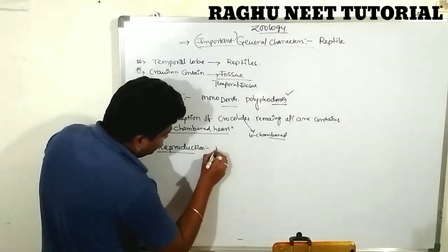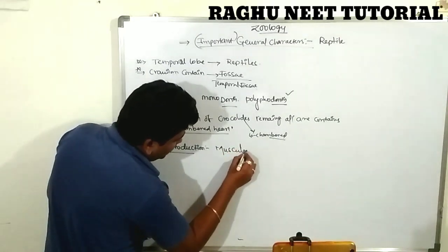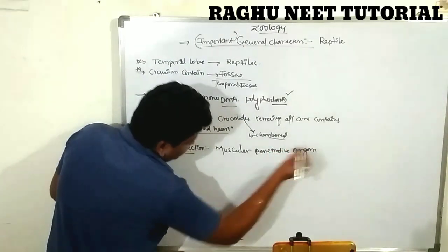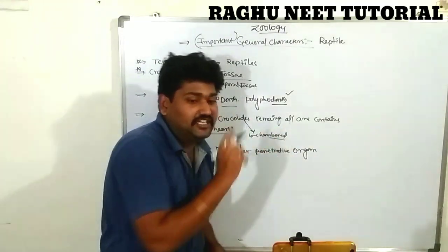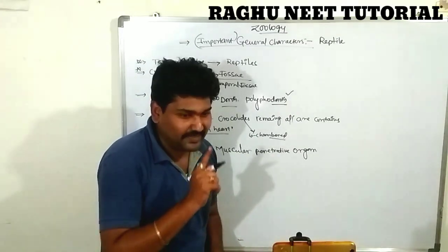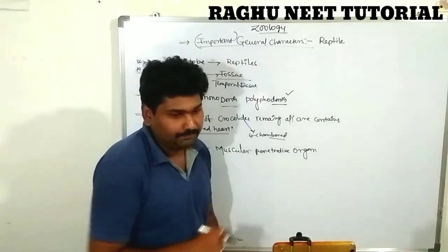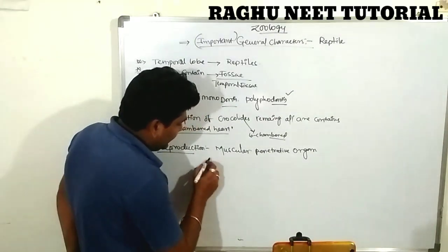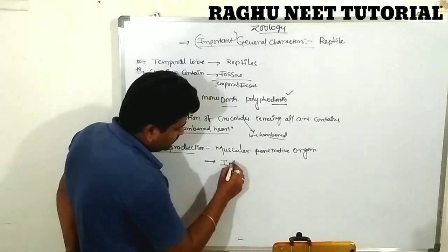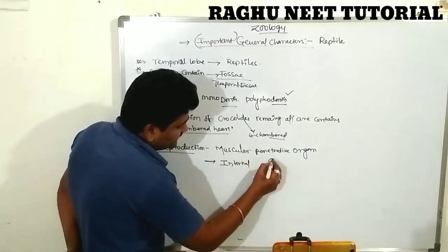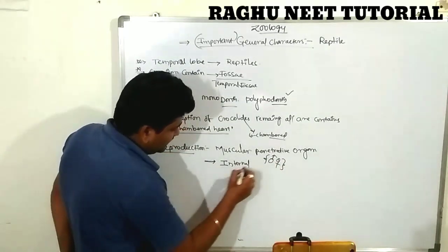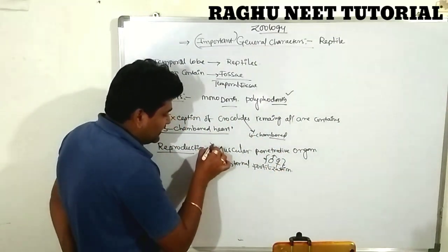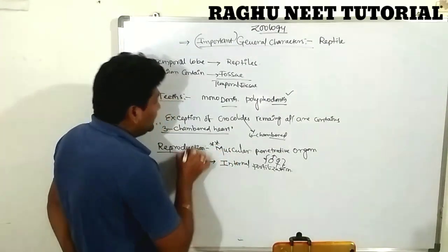The muscular penetrative organ is present in male individuals. This muscular penetrative organ is directly inserted into the female body, releasing sperm to take fertilization inside — this is known as internal fertilization. Both gametes combine to form a zygote internally.